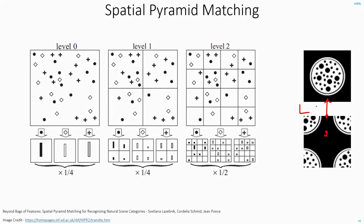So how do you differentiate between these two images? For that, you can use a technique called spatial pyramid matching. What you do is, you process in three different steps: level 0, 1, and 2. In level 0, you just do the bag of words representation — that is, you take all the features and plot the histogram. Level 0 is nothing but your bag of visual words representation.